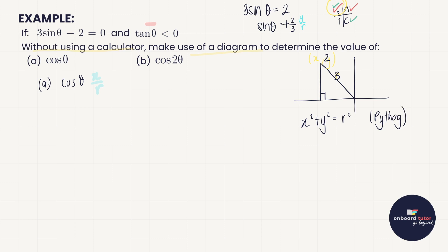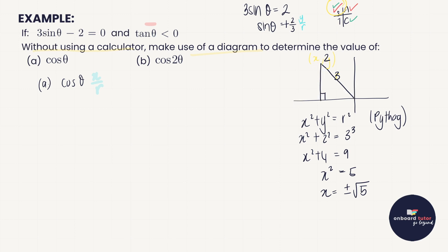Using Pythagoras: x² + y² = r². We know y is 2 and r is 3, so x² + 4 = 9, giving x² = 5, and x = ±√5. Looking at our sketch, the x-coordinate is on the negative side of the axis in quadrant 2, so x = -√5. Now we can answer: cos θ = x/r = -√5/3.